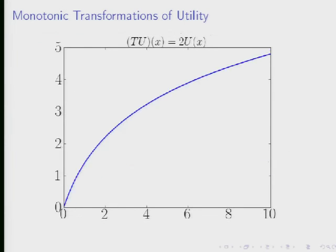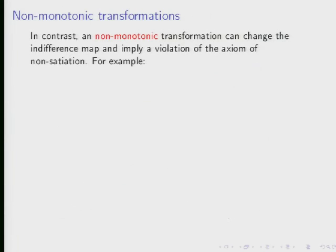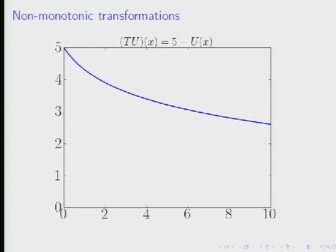Let me go ahead and go back to these counter examples of non-monotonic transformations. Eric's already mentioned one example of a non-monotonic transformation that would screw this up. One is to multiply it by minus one. I added a constant here to make it positive. So I've got 5 minus U(x). This implies a complete reversal of preferences. Now the consumer prefers less to more. So this definitely screws up the indifference map, hence it's a non-monotonic transformation.